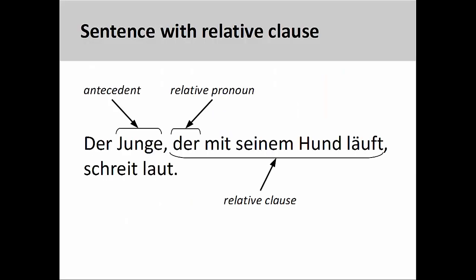You will recall that a relative clause is a type of subordinate clause that provides more information about the antecedent it modifies. In the sentence on the screen, 'der Junge, der mit seinem Hund läuft, schreit laut' — the boy who runs with his dog yells loudly — the antecedent Junge, boy, is further modified by the relative clause 'der mit seinem Hund läuft,' who runs with his dog. The relative clause is connected to the antecedent by means of the relative pronoun der, who. You will also remember that a relative clause will be set off from the rest of the sentence by commas.